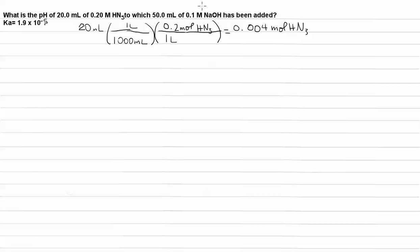Now, let's figure out the number of moles of our sodium hydroxide. We have 50 mL of the solution. For every 1,000 mL, there's a liter. And for every 1 liter, there's 0.1 moles of sodium hydroxide. That gives us a number of moles of 0.005.